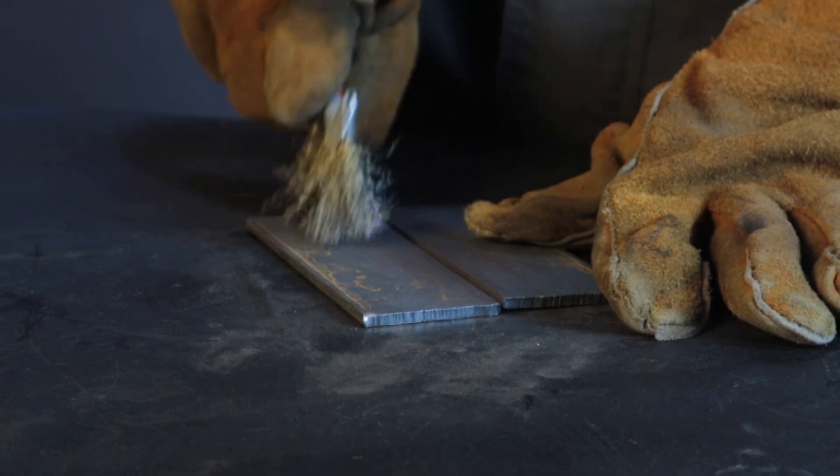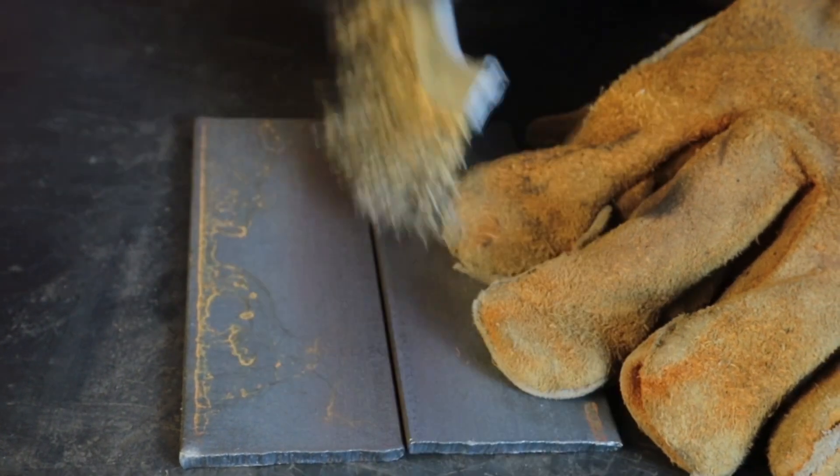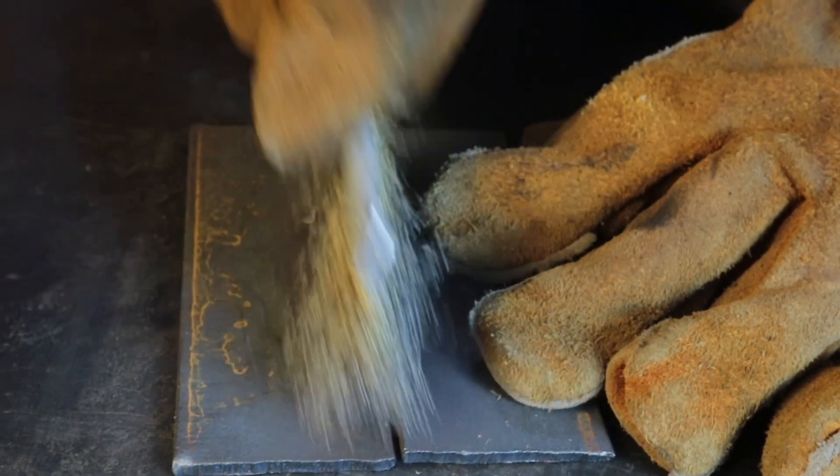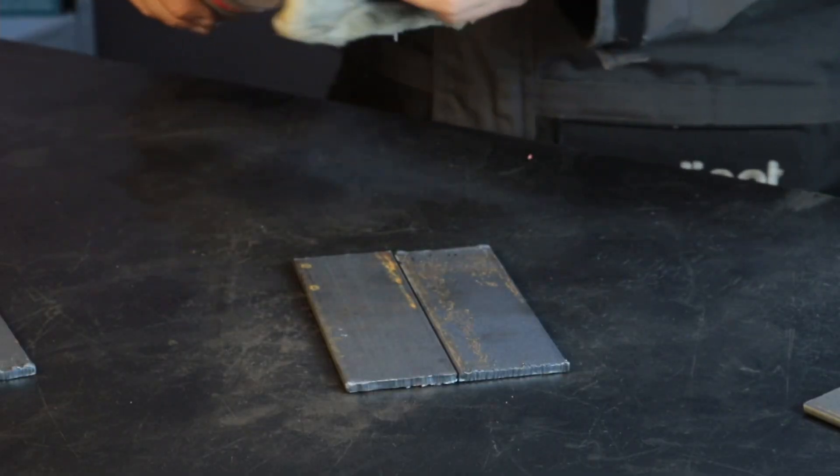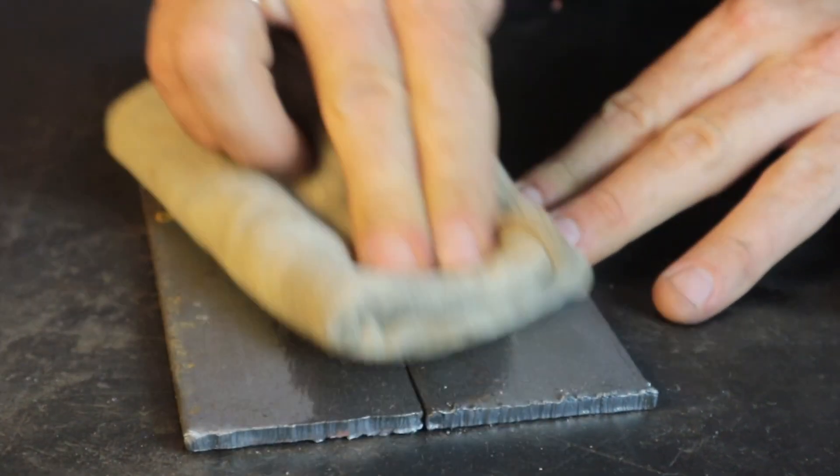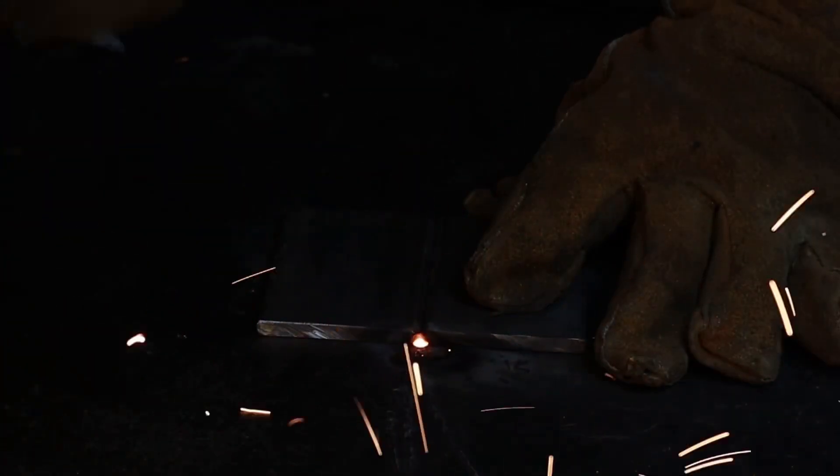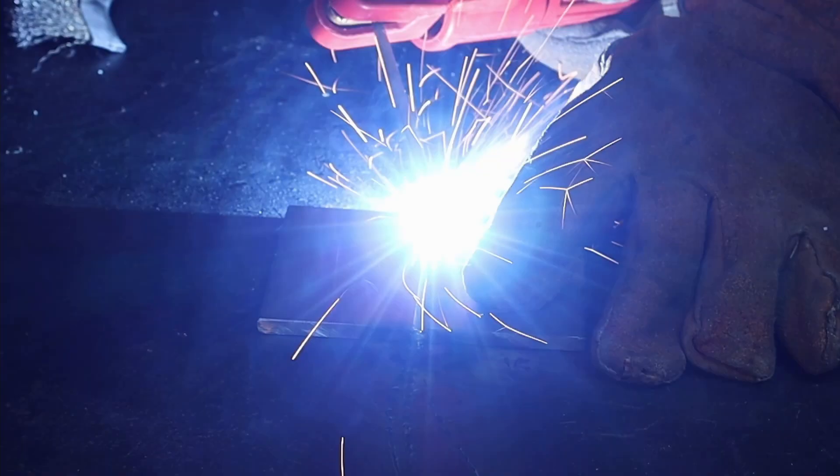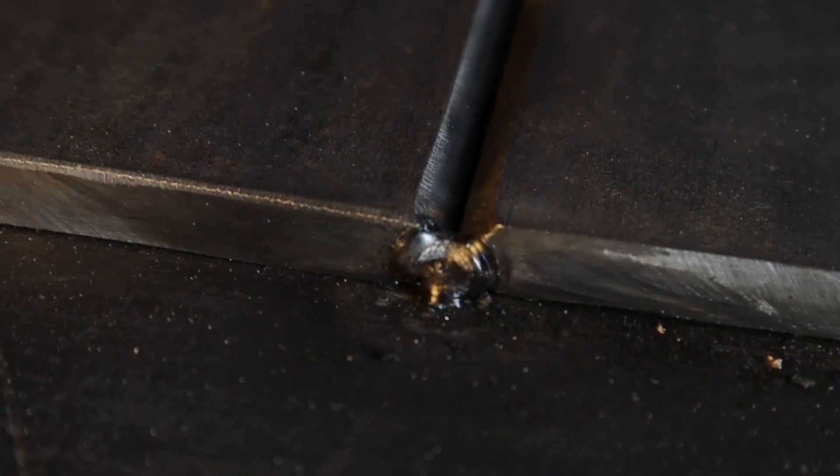It is necessary to clean the weld zones to a width of 20 to 25 mm from the joint with a metal brush. If the workpiece is heavily contaminated, use vinegar or a solvent. Also, before starting welding, make several tacks to firmly fix the workpiece and avoid deformation during welding.